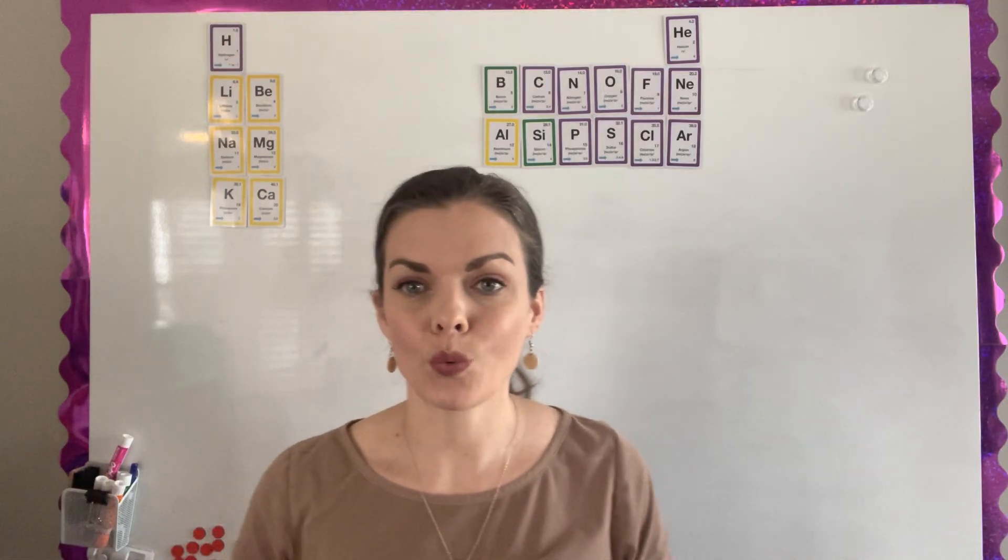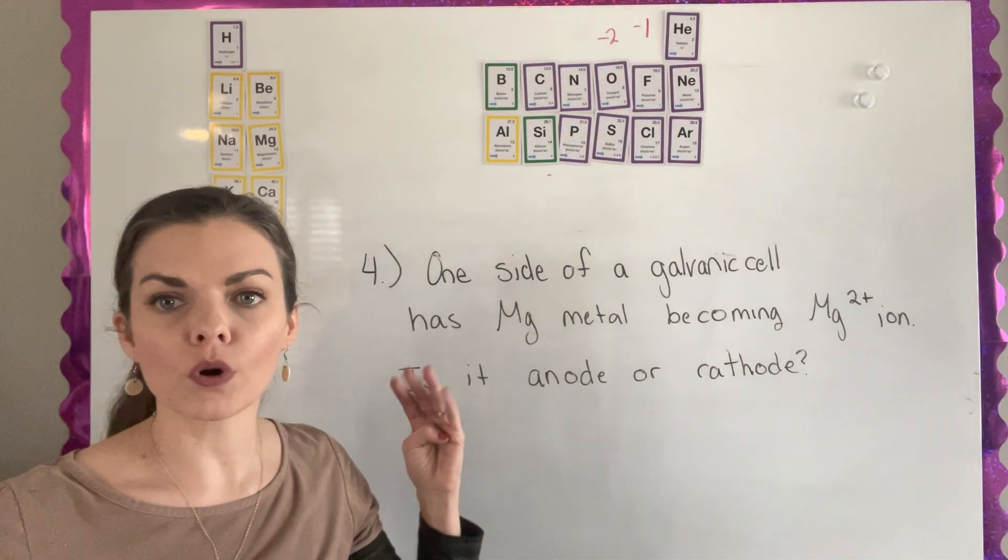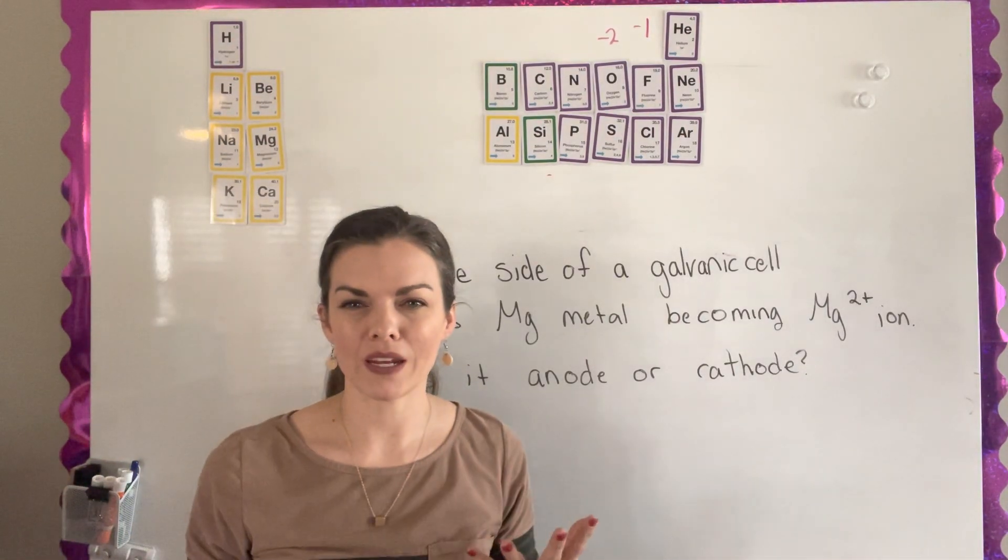Today I'm going to go over the chapter 12 comprehension check. These are called reduction oxidation problems. So number four, you get introduced to a galvanic cell.